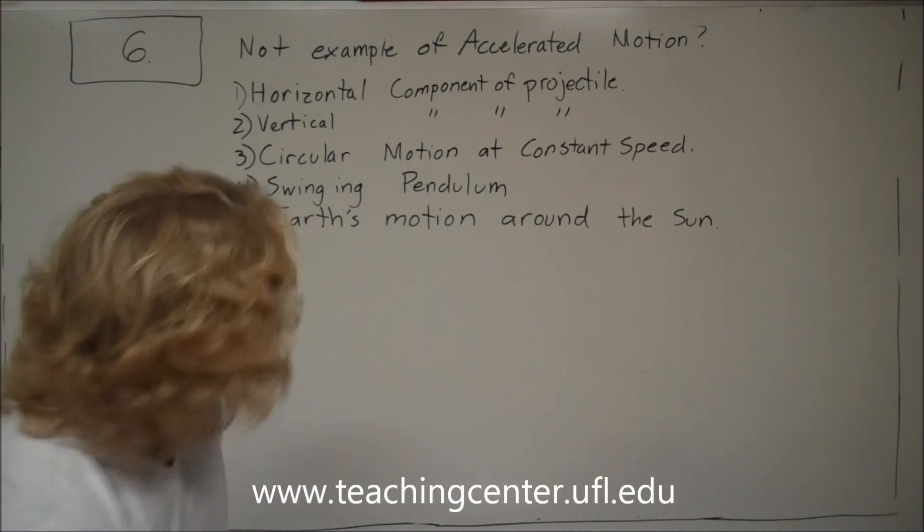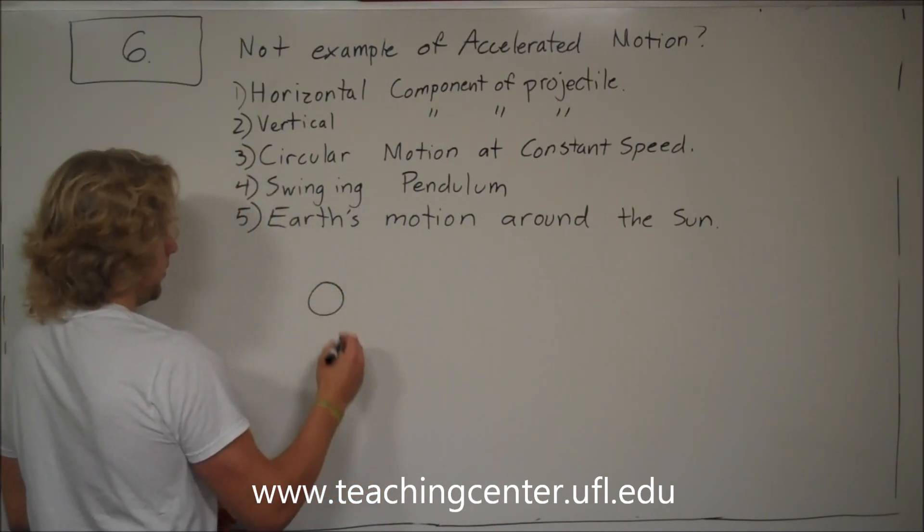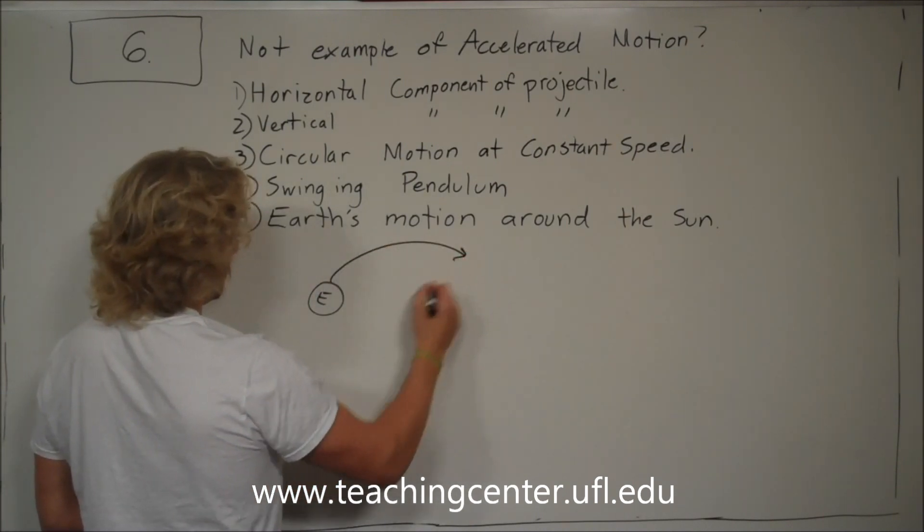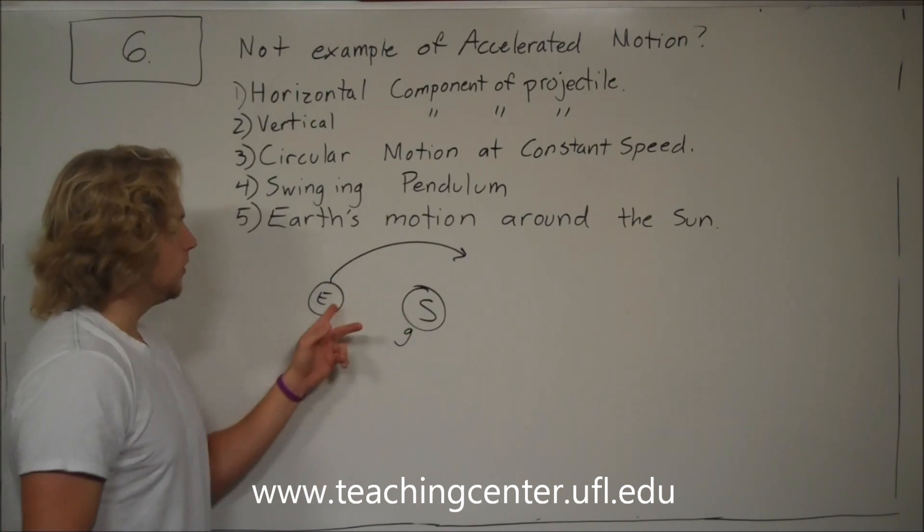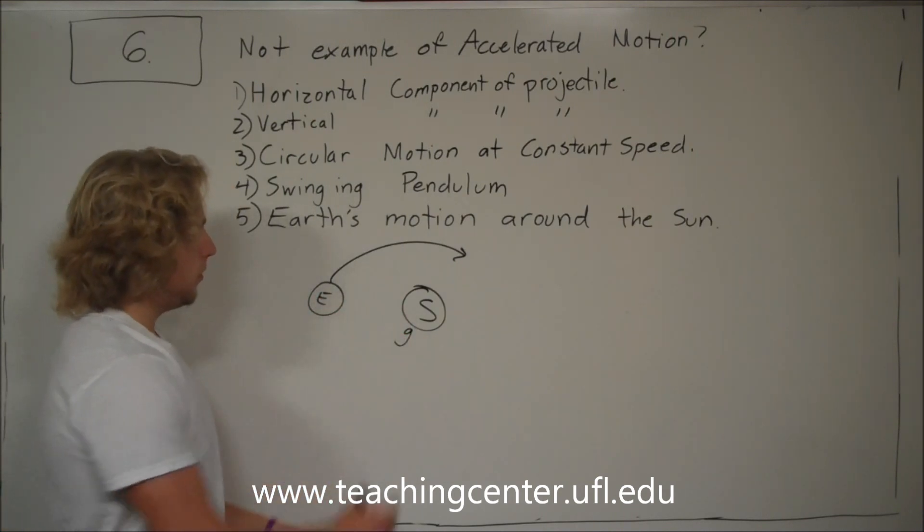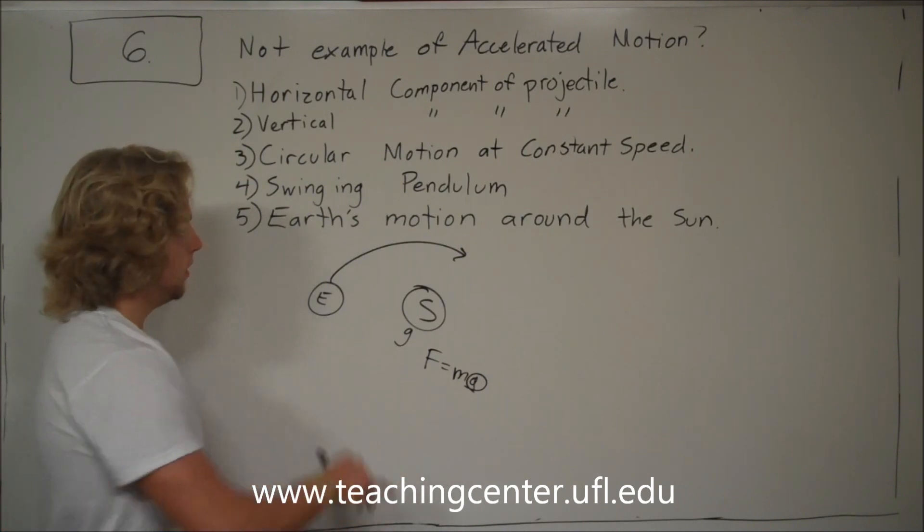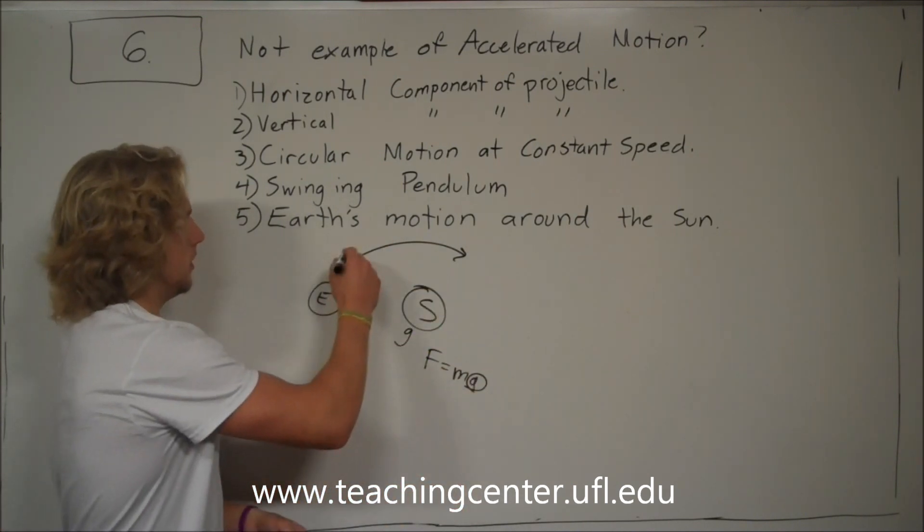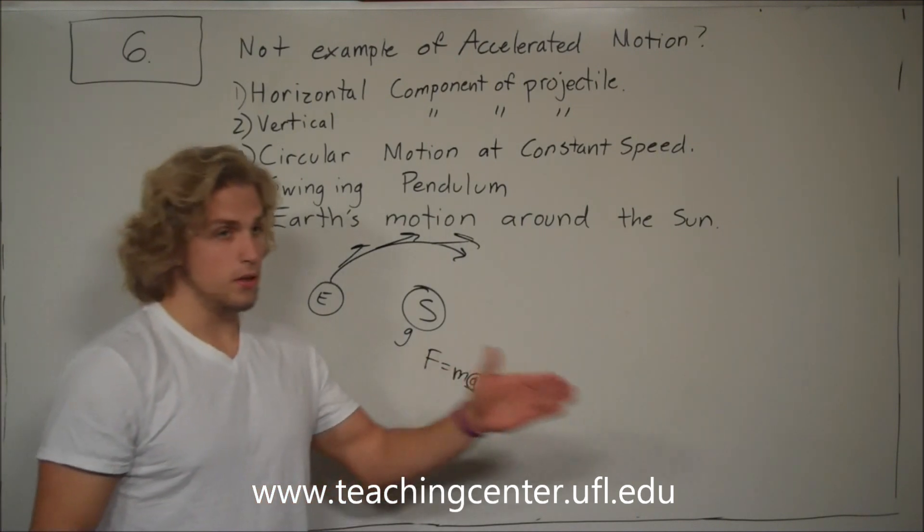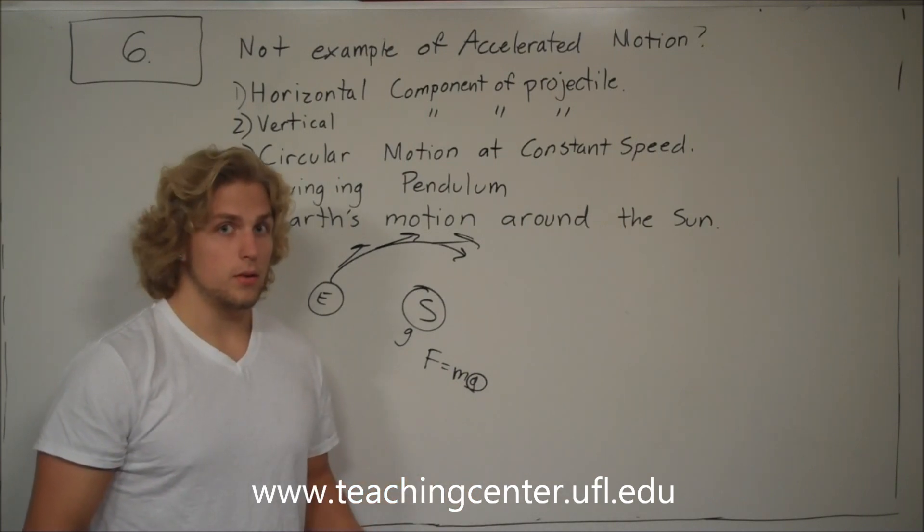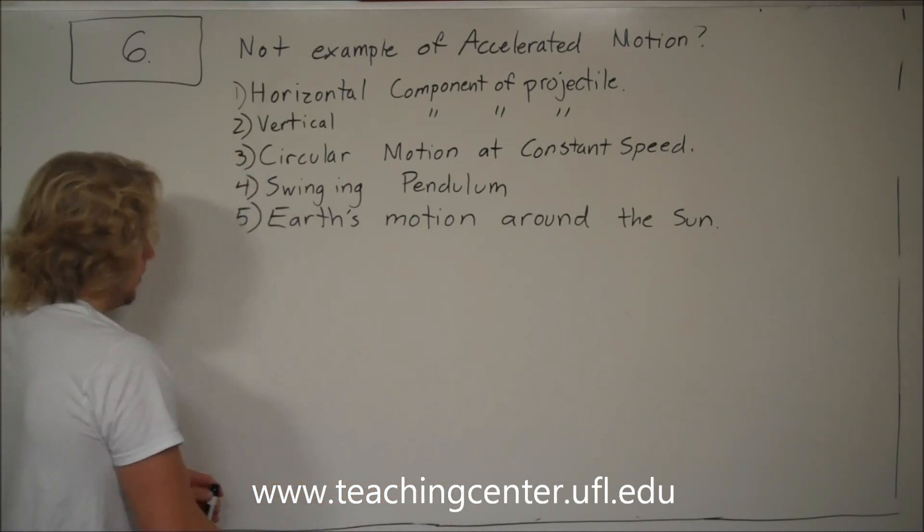Let's go from five to one. Earth's motion around the sun - you have Earth going around the sun. What's causing this? The gravitational force that the sun exerts on Earth. Force equals ma, so there is acceleration. Not only that, but it's going in a circle, so direction is changing. Even if it's going at the same speed, there is acceleration if direction is changing. So five is out.